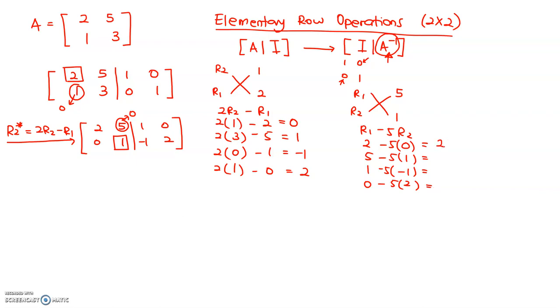So, 2 minus 0, this is 2. 5 minus 5 is 0. 1 plus 5, so this is 6. 0 minus 10 is negative 10. So, what do we do? We change row 1. The formula is row 1 minus 5 row 2.